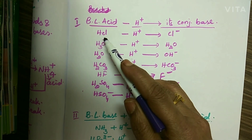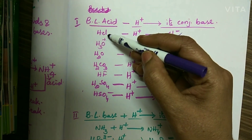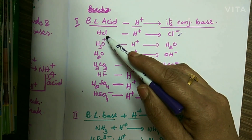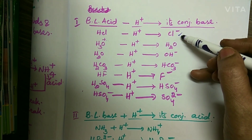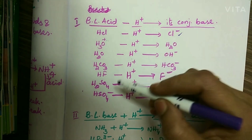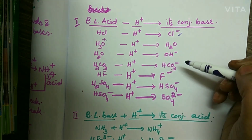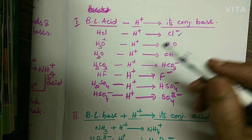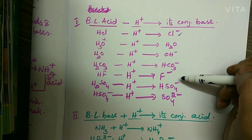For example, HCl minus H⁺ gives Cl⁻. HCl is an acid and its conjugate base is Cl⁻. HCl is a strong acid and Cl⁻ is a weak base. For any strong acid, its conjugate base will be weak, and vice versa — for weak acids, their conjugate base will be strong.